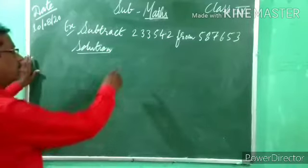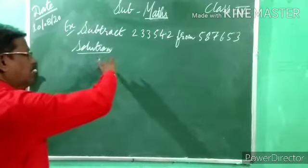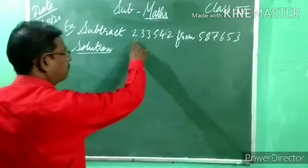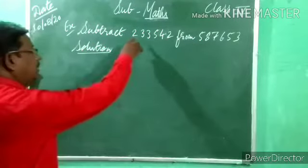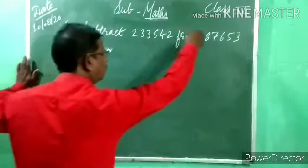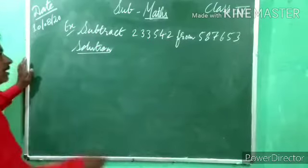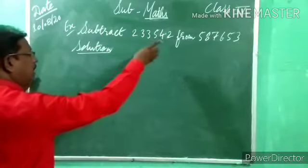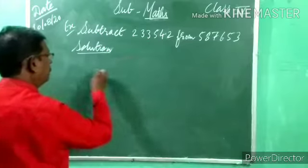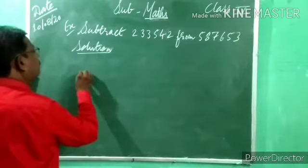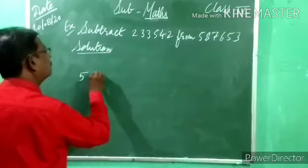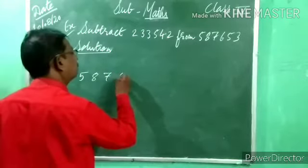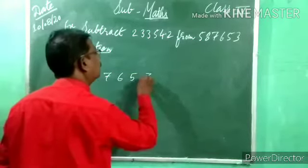Kabhi bhi subtraction mein bada number upar likhta hai. Which is bigger — 2,00,000 or 5,00,000? The second number is bigger. So 5,87,653 is on top. Write: 5, 8, 7, 6, 5, 3.